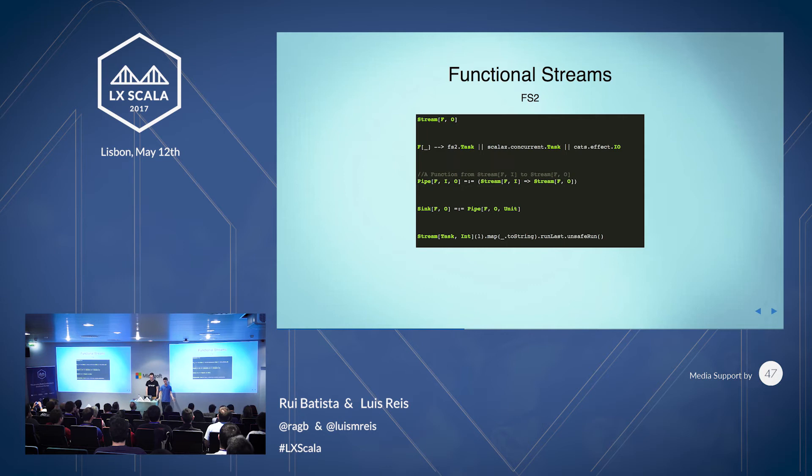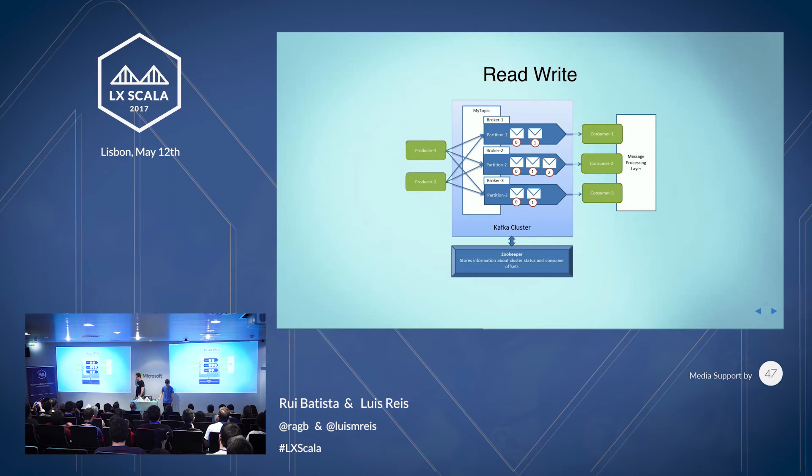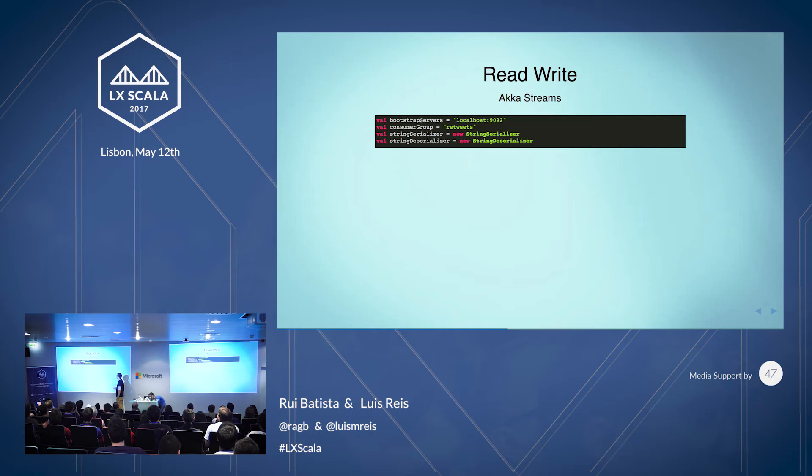Here's a simple FS2 example. You construct a stream parameterized with Task — in this case FS2 Task — as a stream of integers. You pass one element, map it with toString, and at the end call the runLast method. The run methods convert a Stream[Task, A] to a Task of something — here, a Task returning the last element. To actually execute, you call an unsafe run method, because running programs isn't safe in this functional purity world.